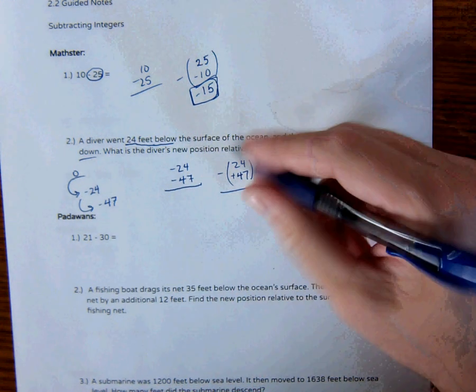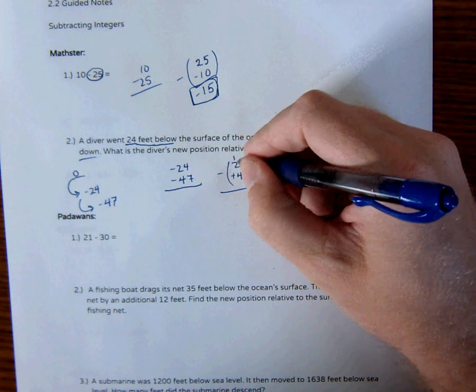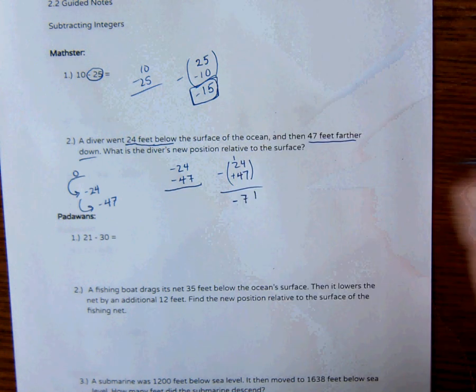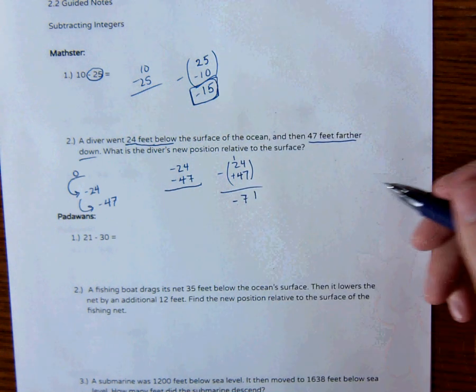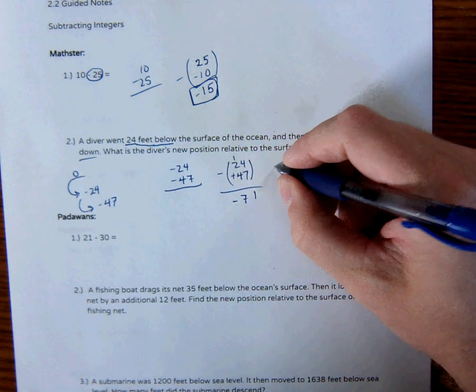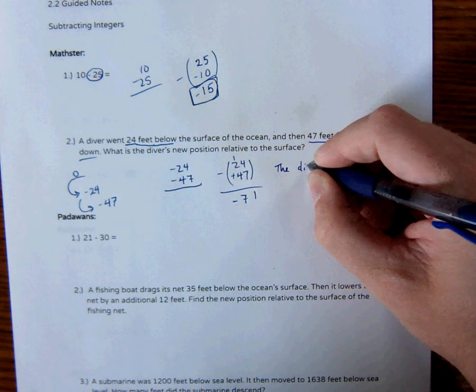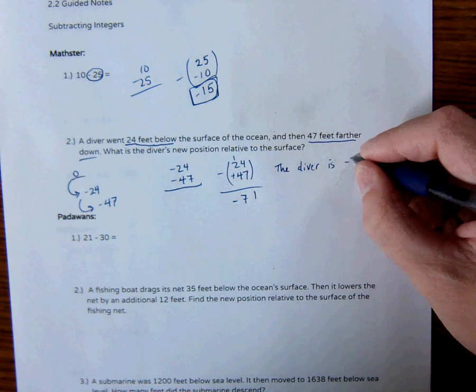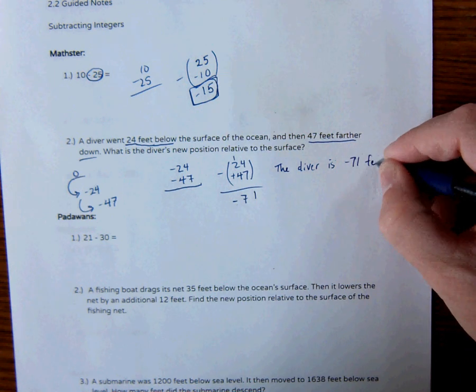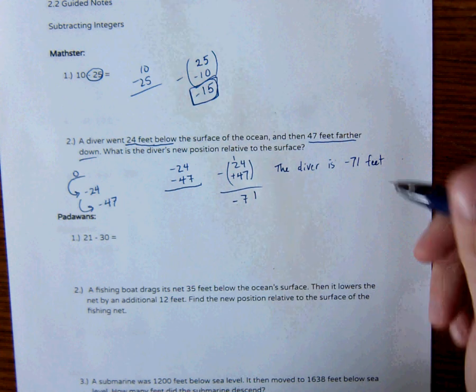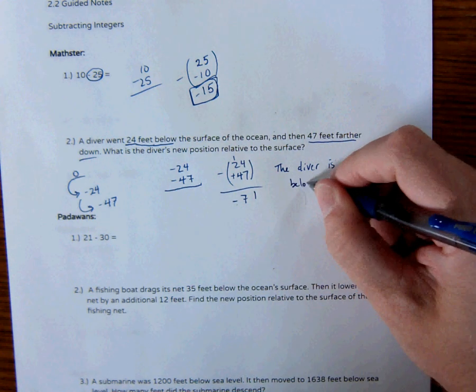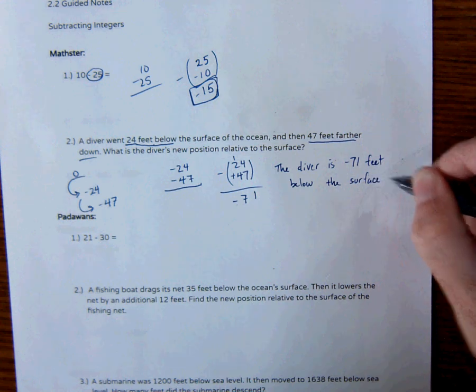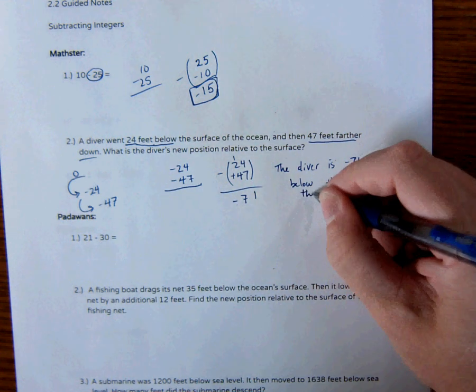So 7 plus 4, that's 11, carry the 1. 1 plus 2 is 3, plus 4 is 7, so this is negative 71 feet. So the diver is negative 71 feet below the surface of the ocean.